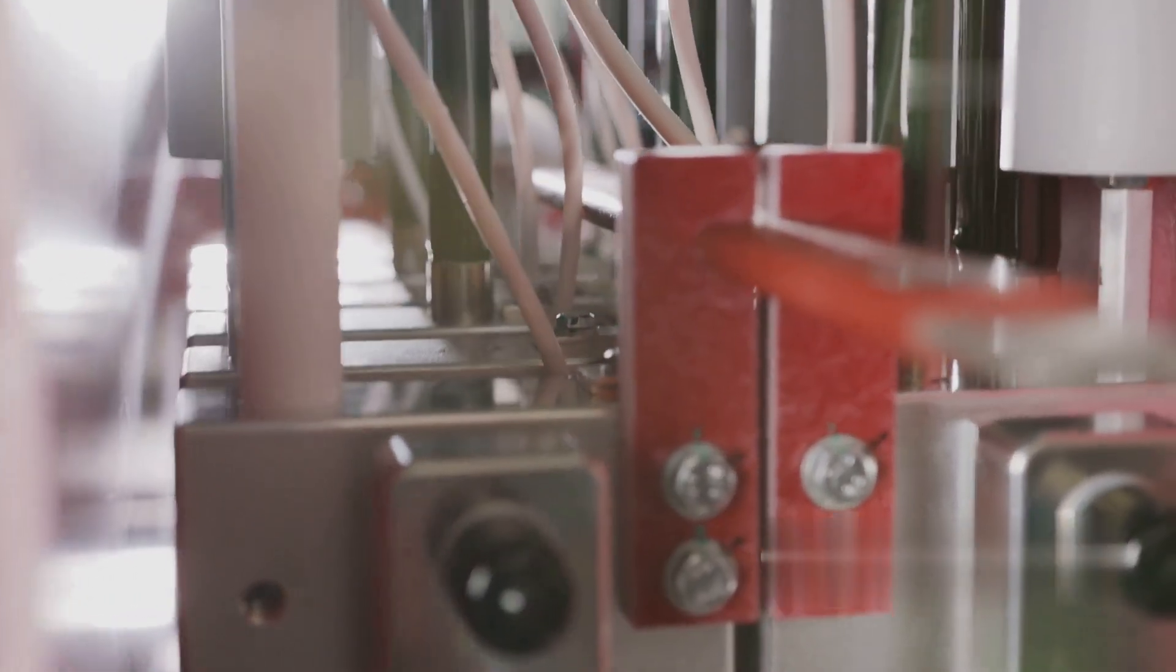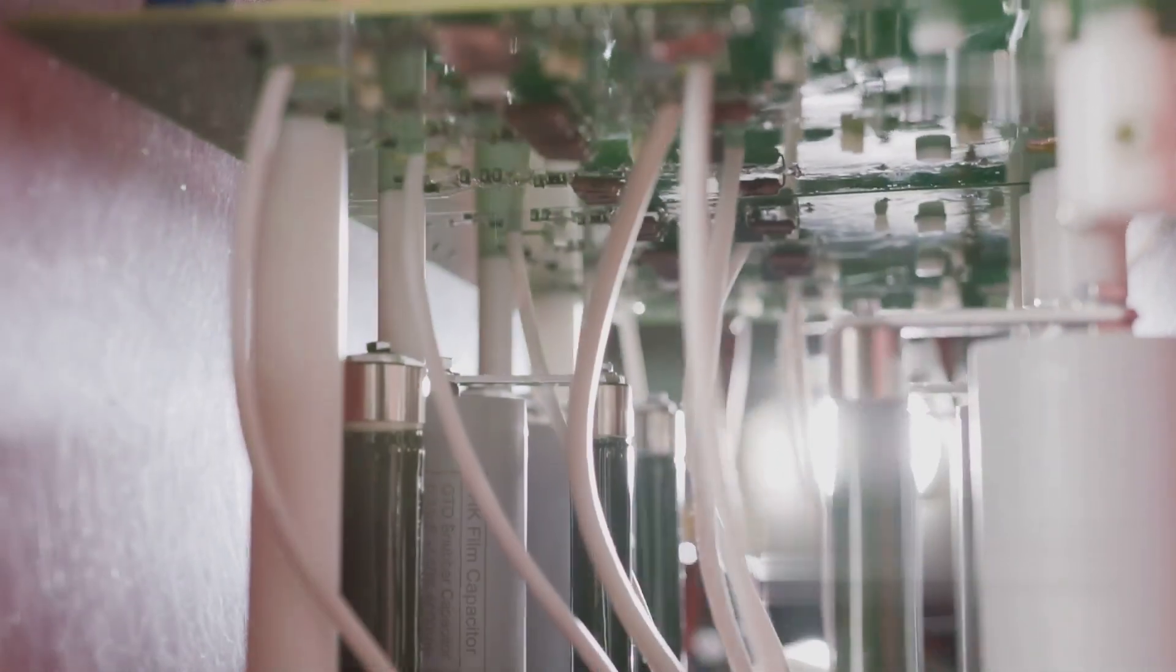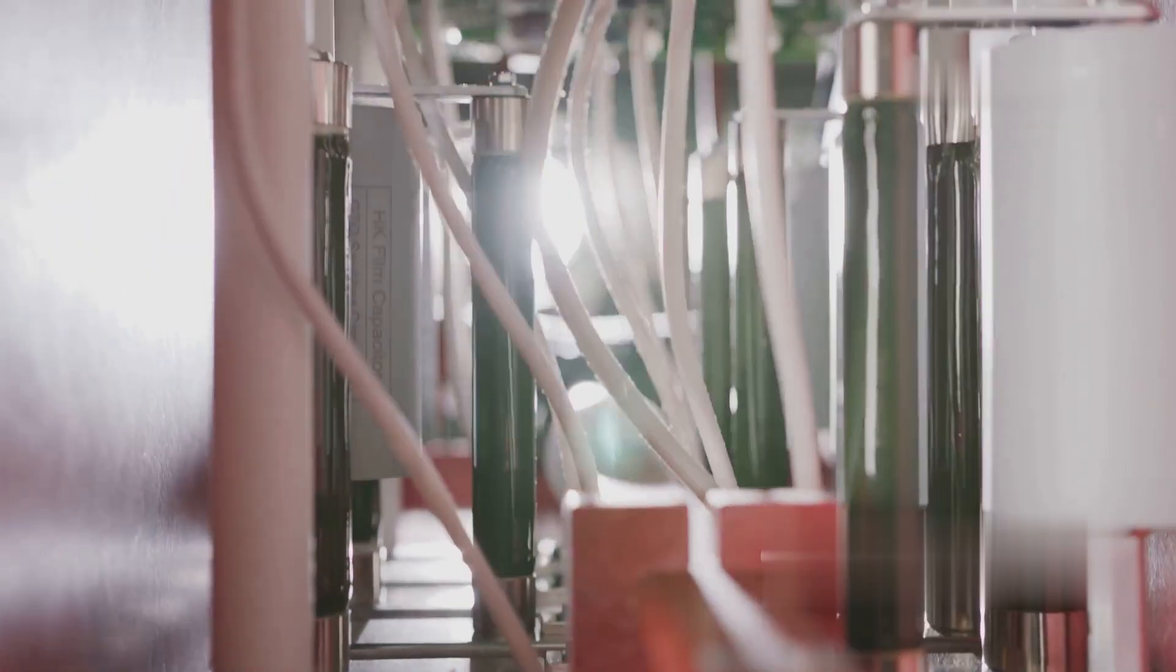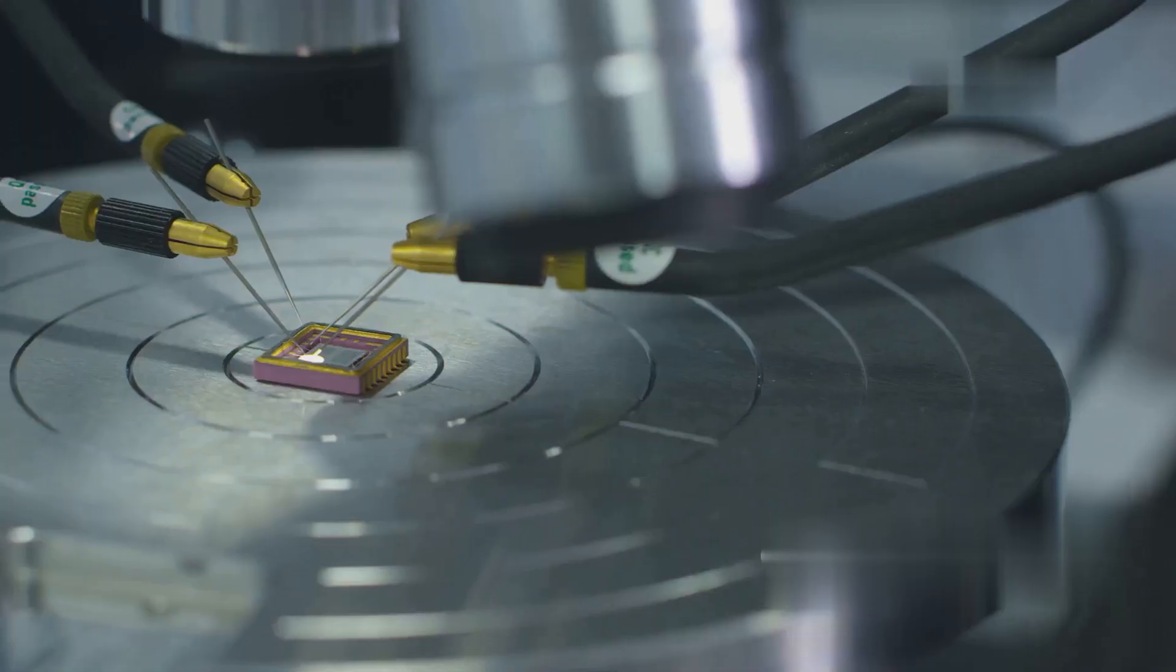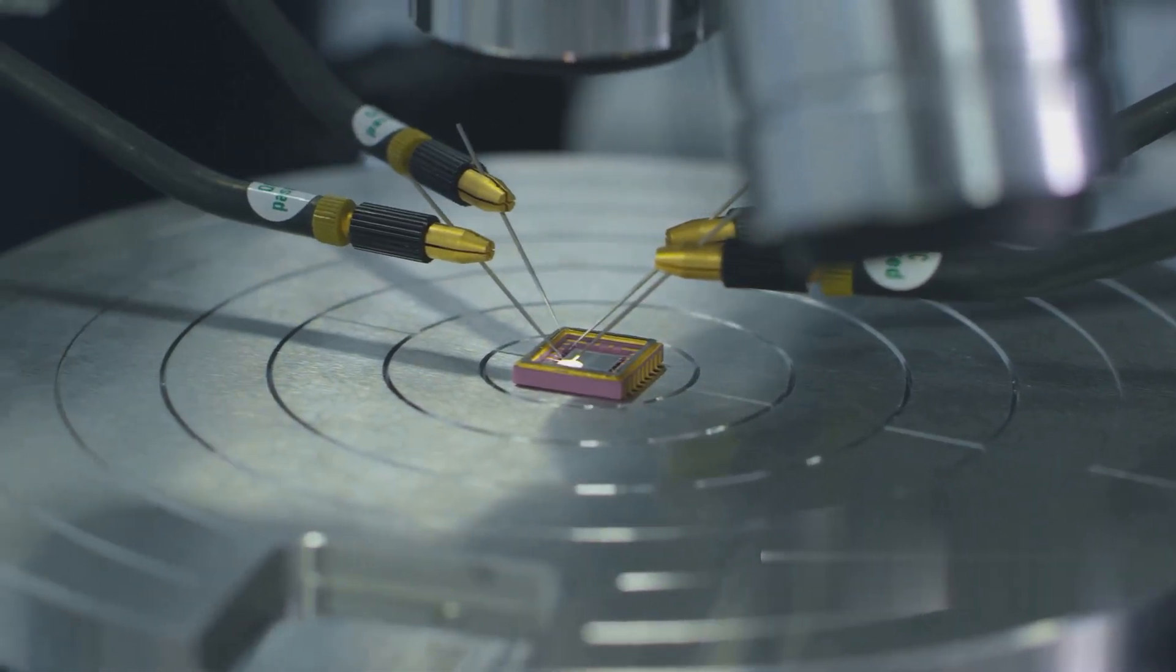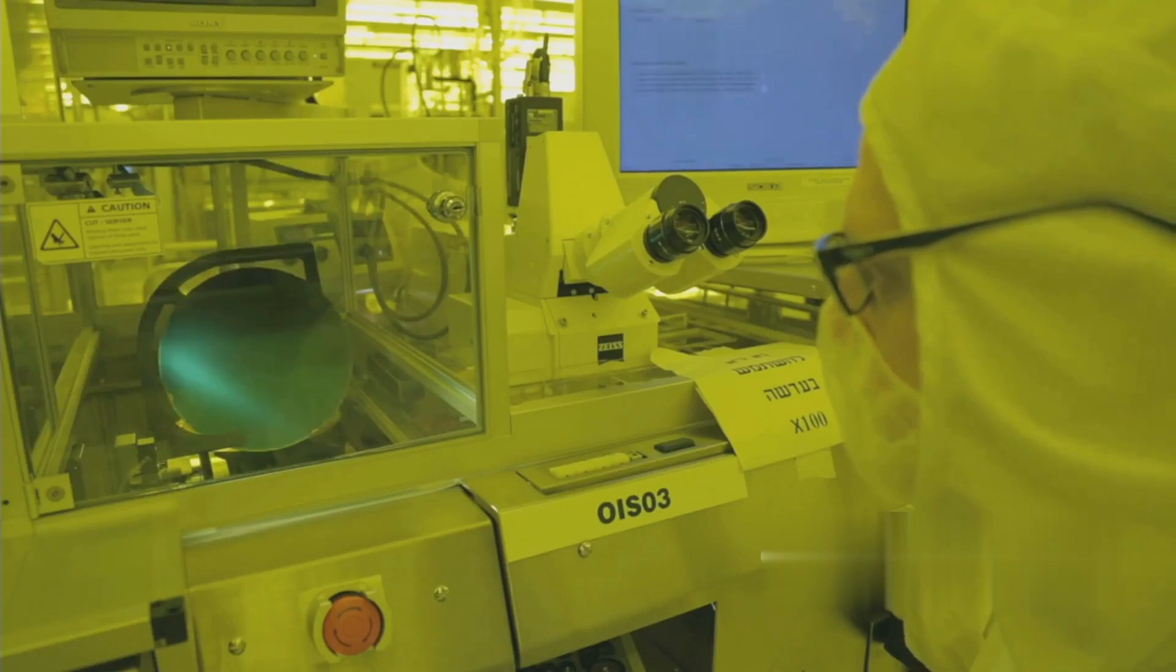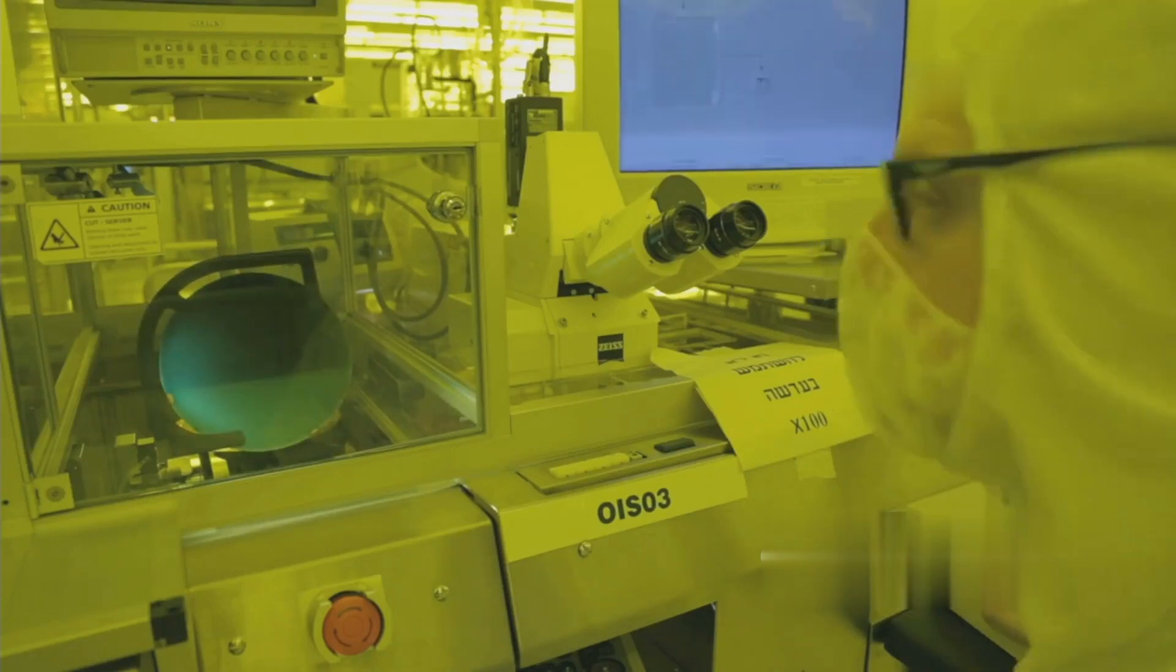Once the transistors are fabricated on the wafer, they undergo rigorous testing to ensure their functionality and performance. This involves applying electrical signals to the transistors and measuring their response, verifying that they operate within the specified parameters. Defective transistors are identified and marked, ensuring that only functional devices are packaged. The wafer is then diced into individual chips, each containing millions or even billions of transistors. These chips are carefully inspected for any physical defects that may have occurred during fabrication or dicing. Only flawless chips are selected for packaging.